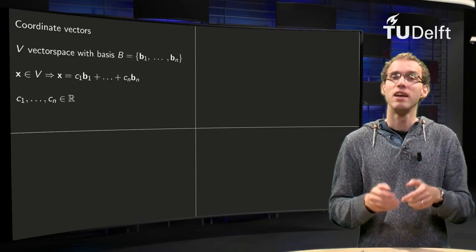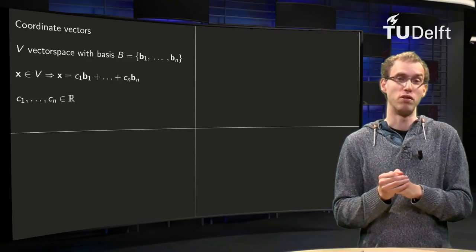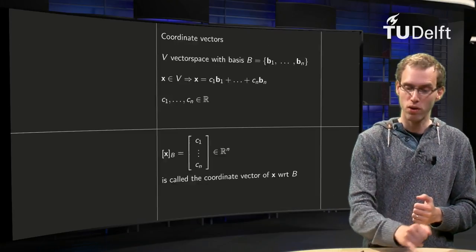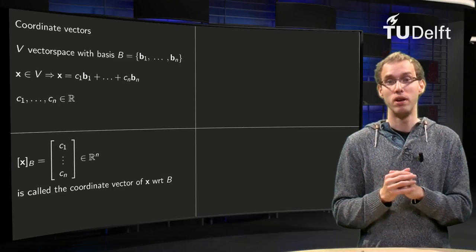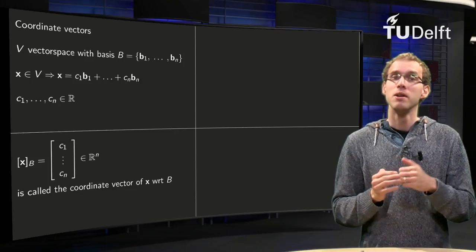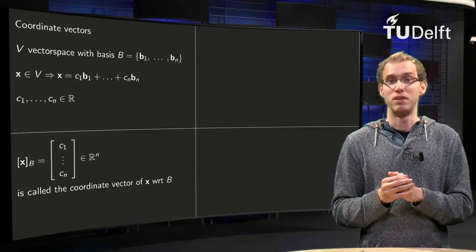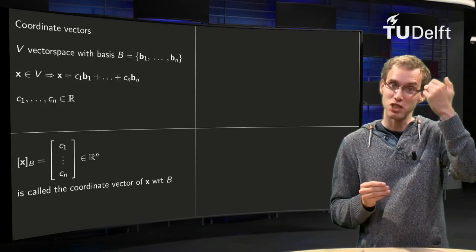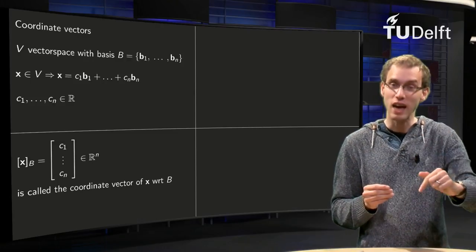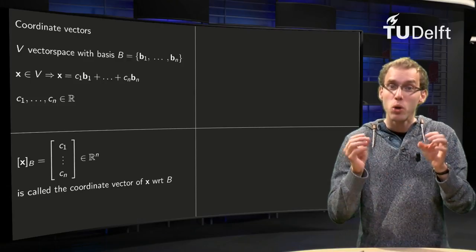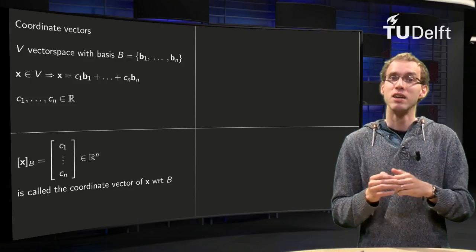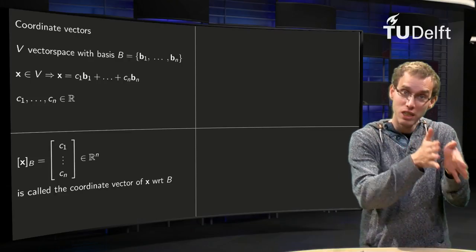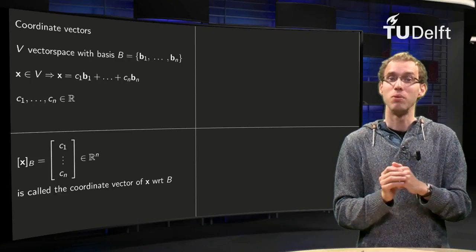If I have those numbers c1 up to cn, I can put those numbers in a vector, and this vector is called the coordinate vector of x with respect to the basis B. The nice part of this coordinate vector is that it's a vector consisting of numbers c1 up to cn, so this coordinate vector is a normal vector in R^n, which tells us it contains all the information of our original vector x which was in V.